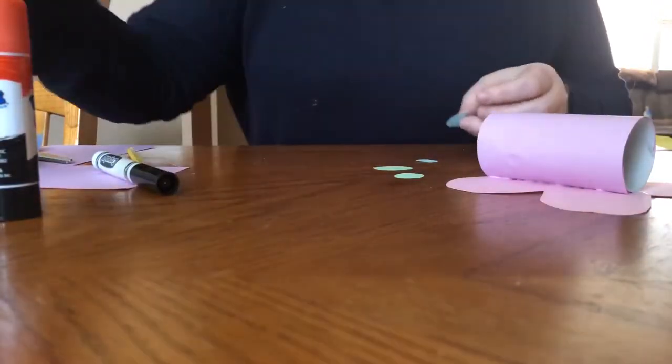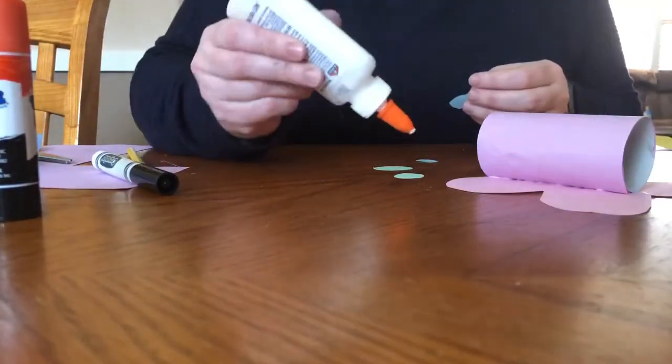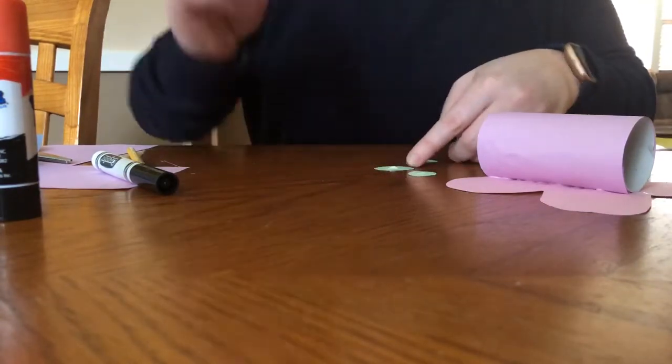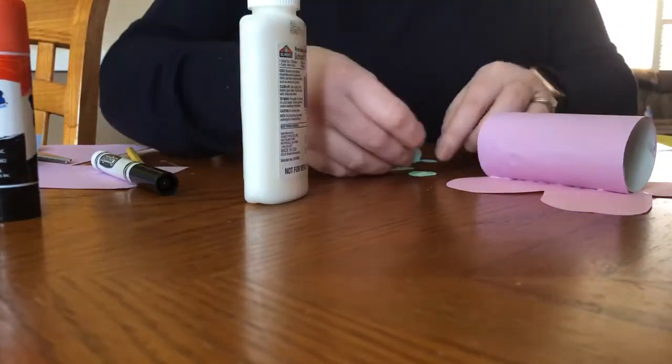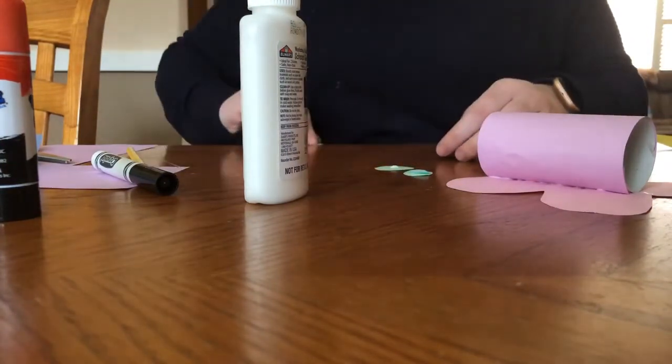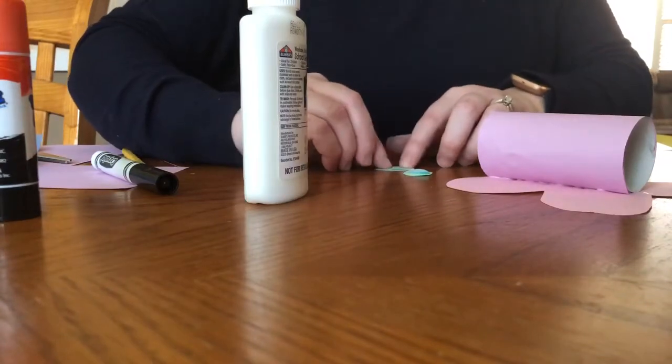Once I have my others cut out, I'll add a teeny bit of glue here. I'm going to place the other colors on there. There we go.